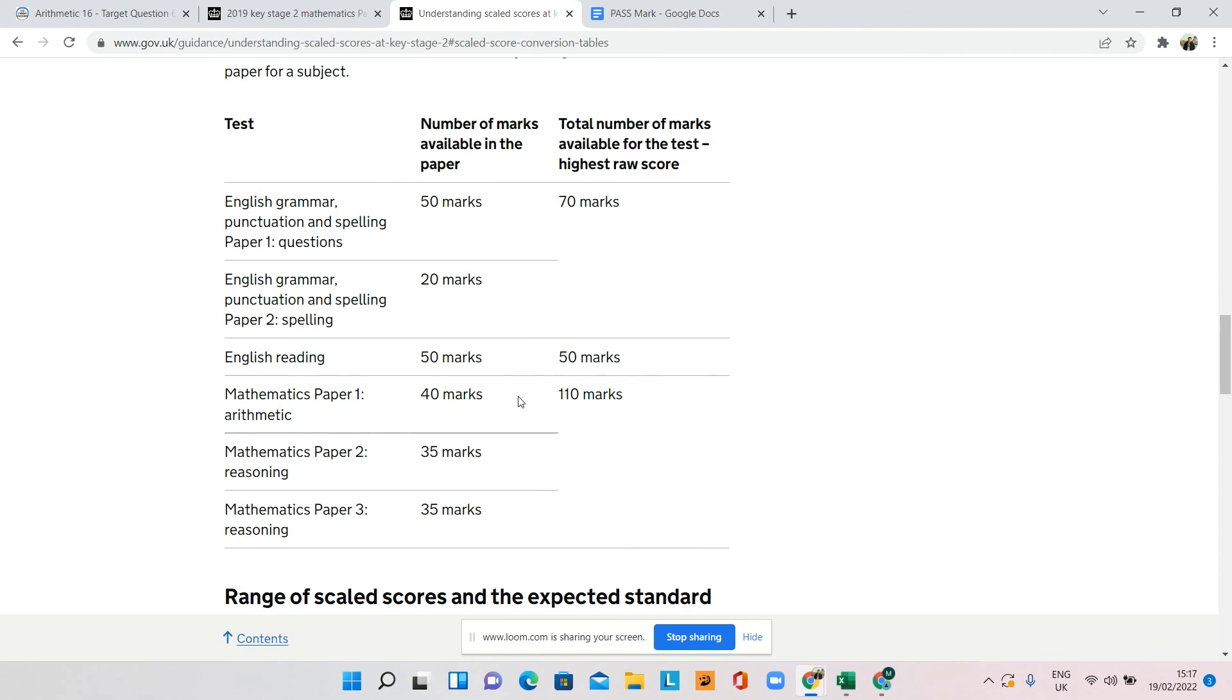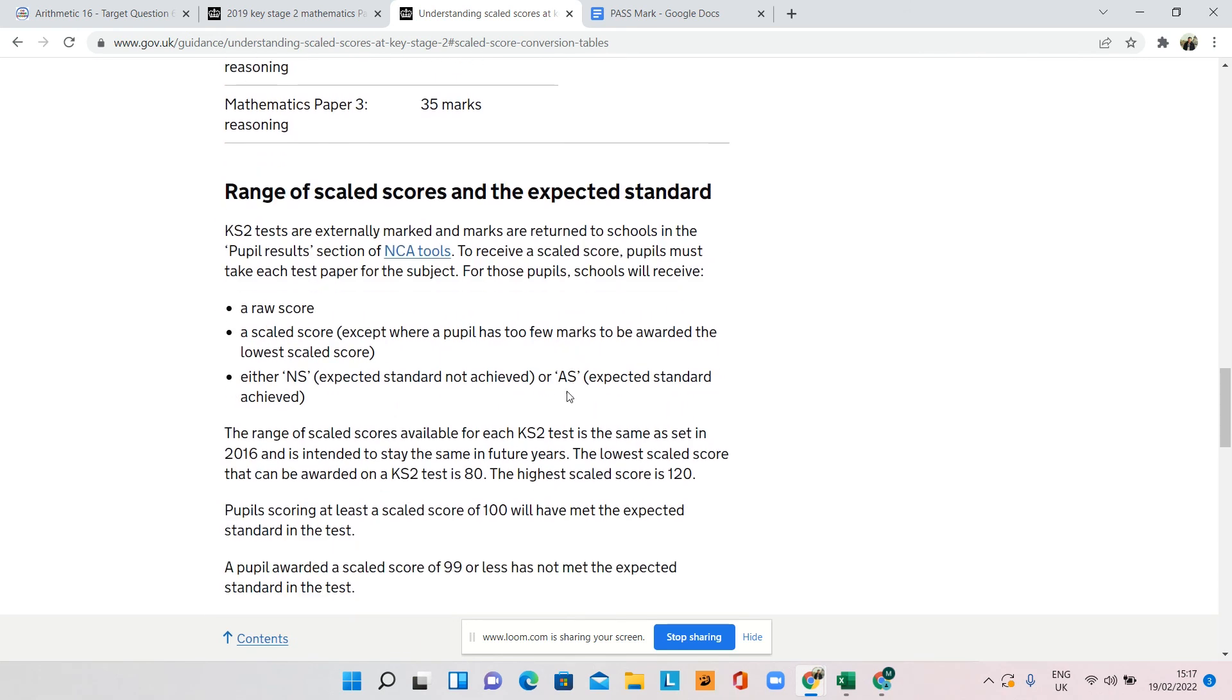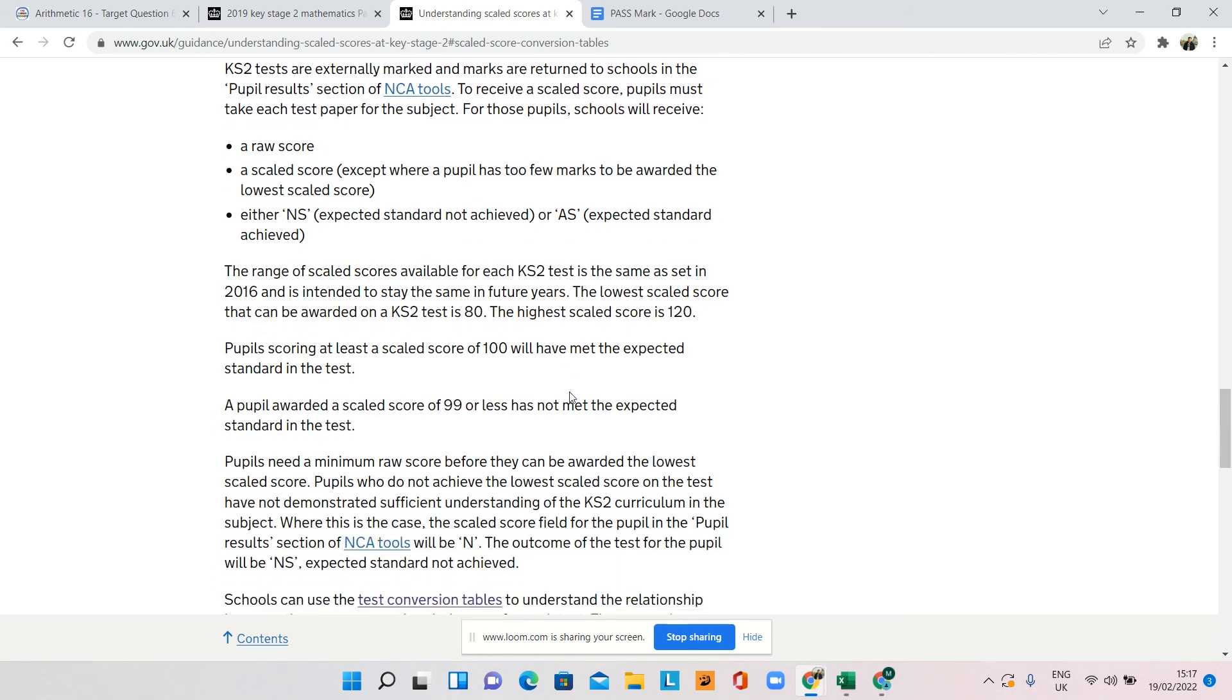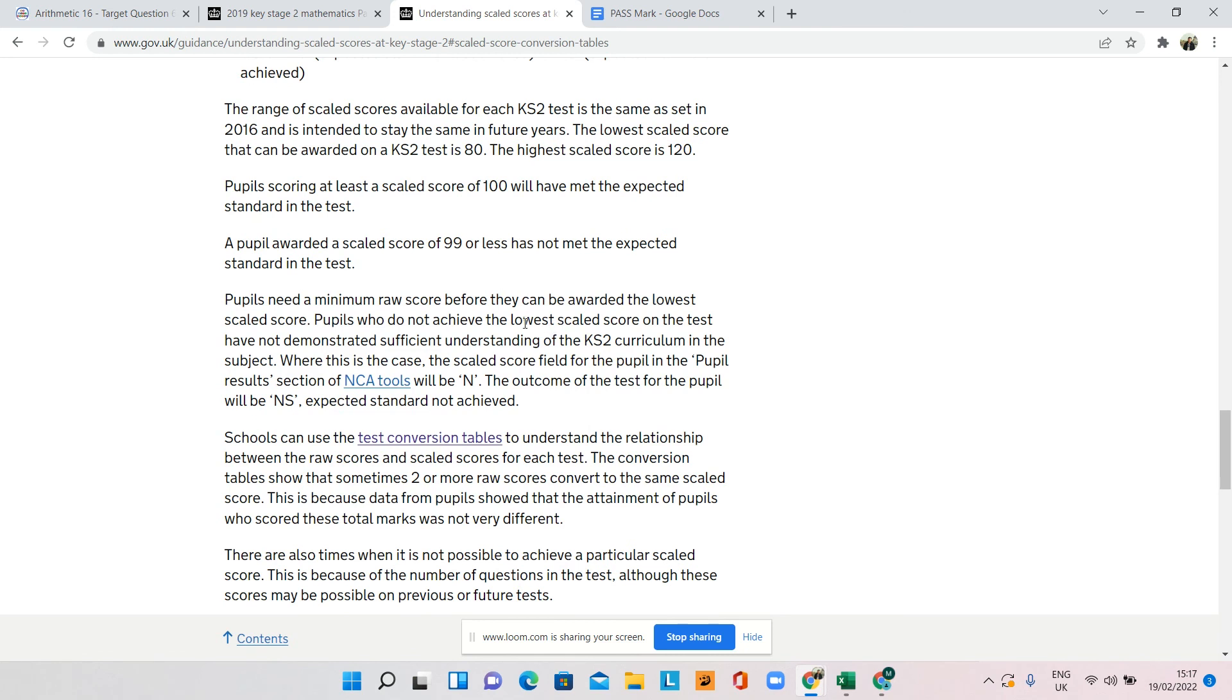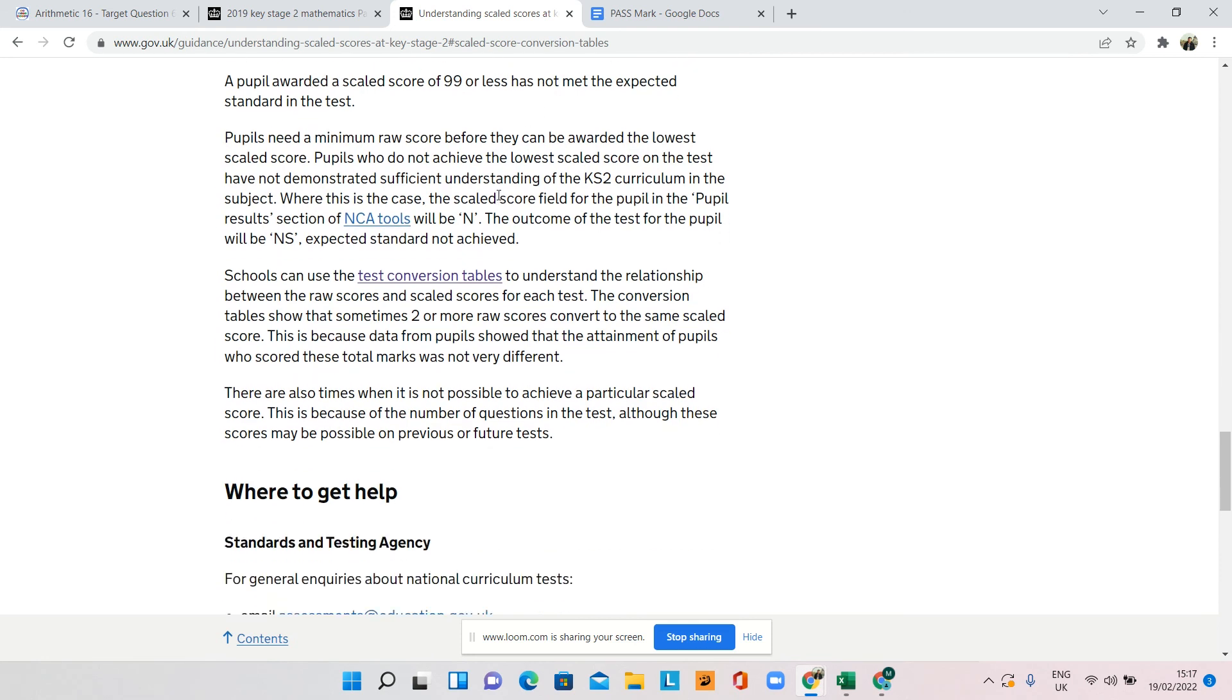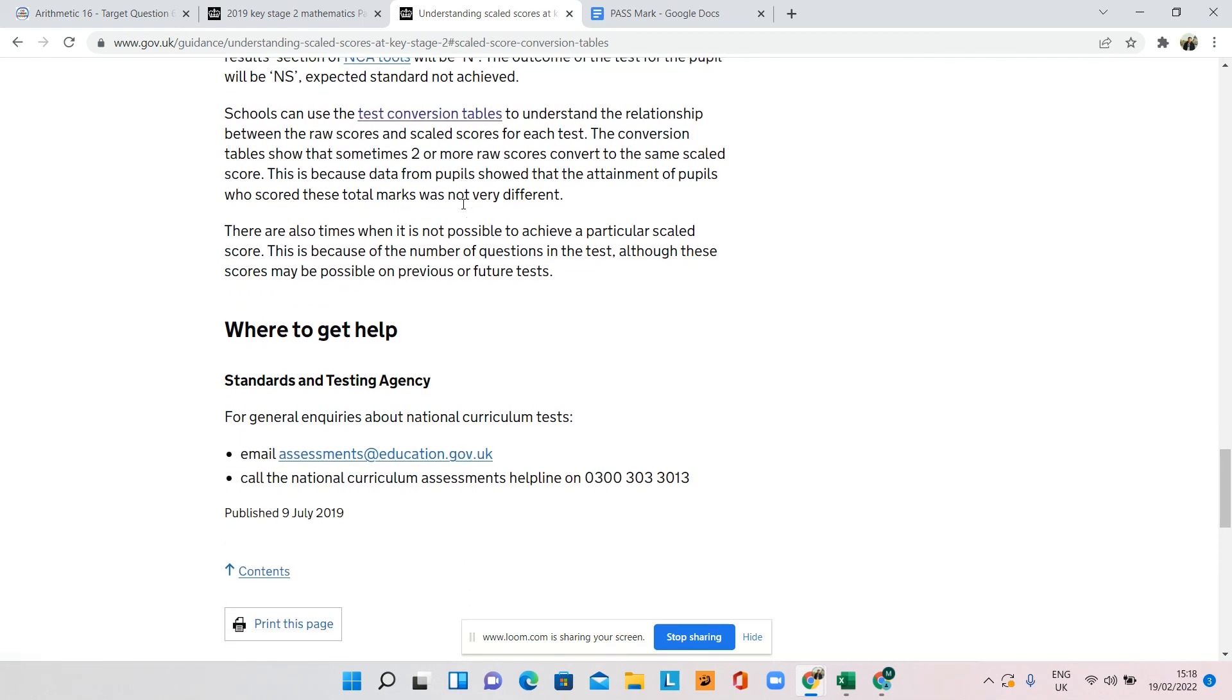Doesn't say here, but it would be in the high hundreds. Okay. Yeah. So here it says, you can see 100 will have met the expected standard. People who scored 19 or less will not have met this expected standard test conversion tables.